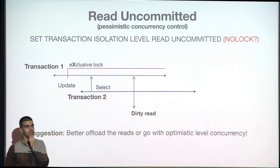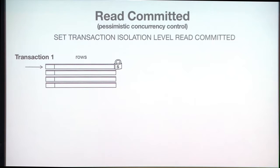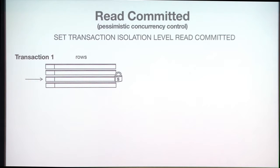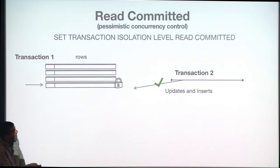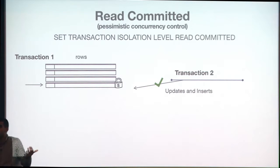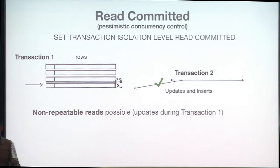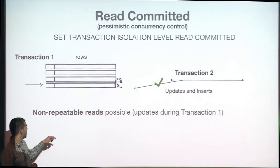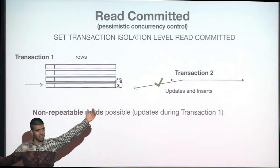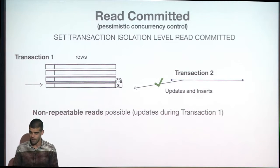Let's move one level higher to the default isolation level: read committed. In read committed, I place a shared lock on a record, read it, release the lock, and move to the next one. If another transaction kicks in, it can update records I just read and commit, or insert a new record I'm about to see.